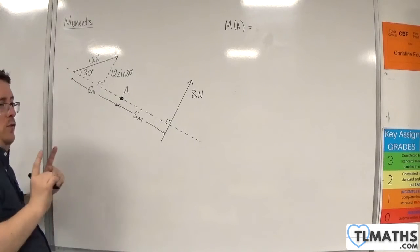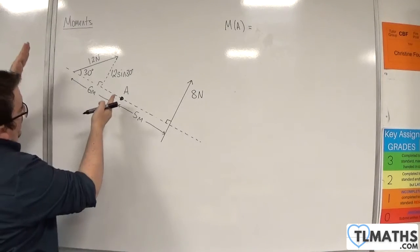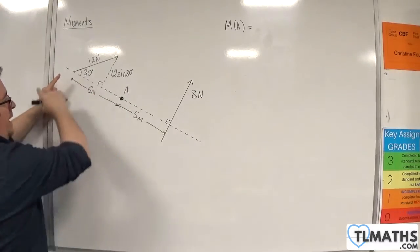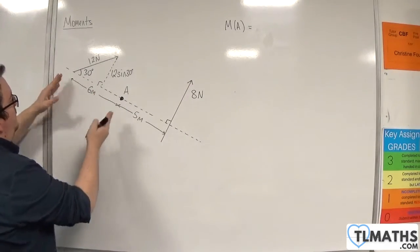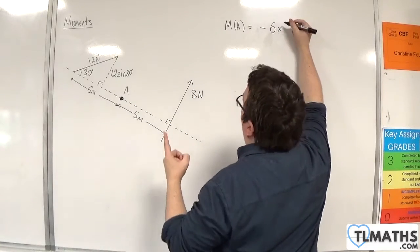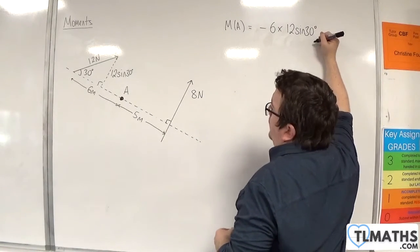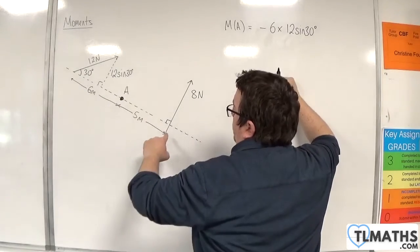So that can be the thing that can trip students up here. So that is going around in a clockwise motion, so it's negative. So take away 6 times by 12 sine 30. And then I'm 5 metres away from the 8 Newton force, which is going around in an anti-clockwise motion. So plus 5 times 8.